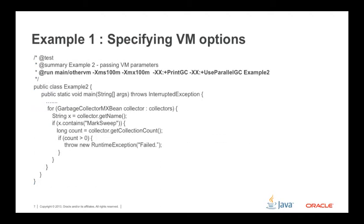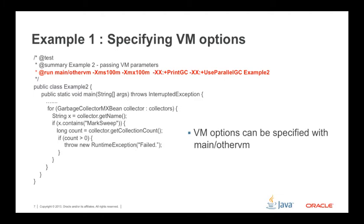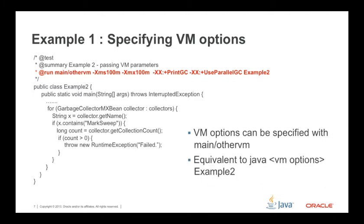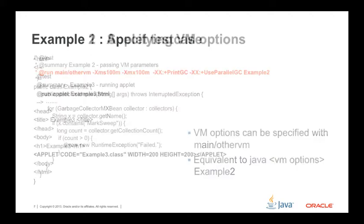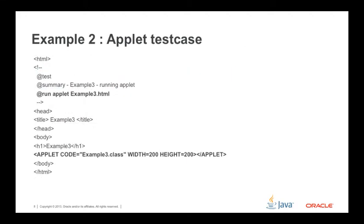Example 1: Specifying VM option. VM options can be specified with the '@run main' or other VM action tags. This is equivalent to invoking Java with VM options.